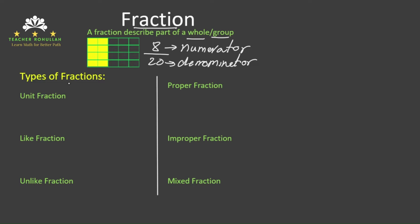Let's now move to the types of fractions. There are 6 types of fractions listed over here. The first type is called unit fraction. A unit fraction is a fraction in which the numerator is 1. For example, 1 half, 1 fifth, or 1 fourth. So the fraction in which the numerator is 1 is called unit fraction.